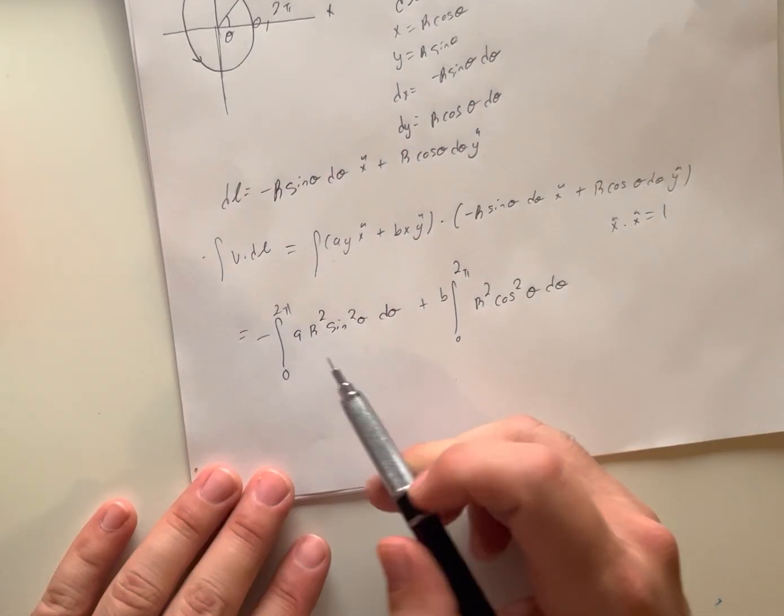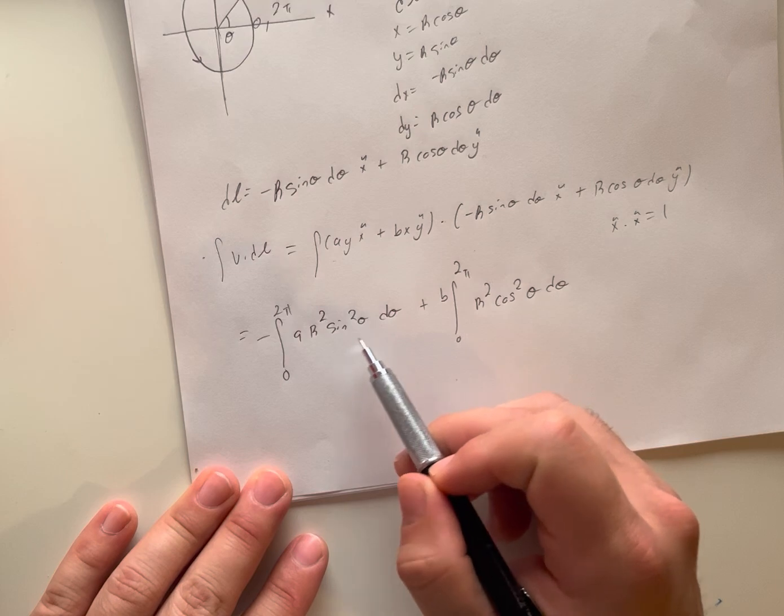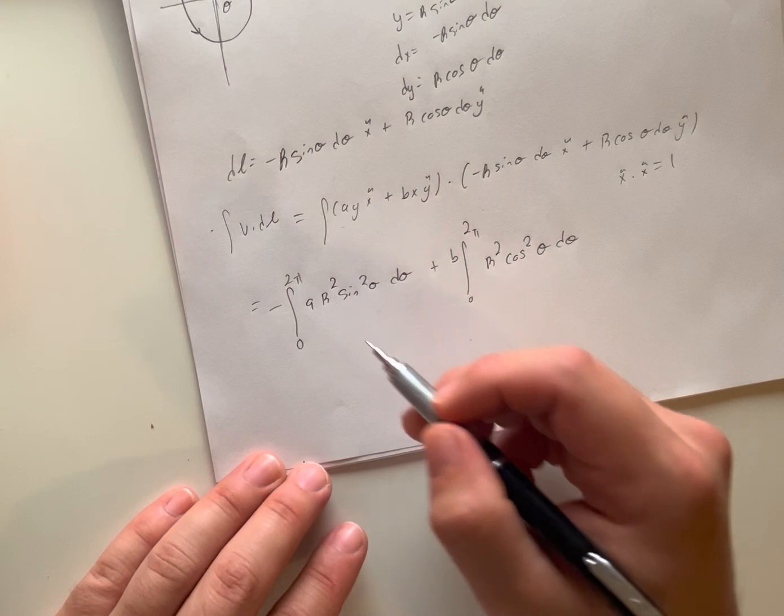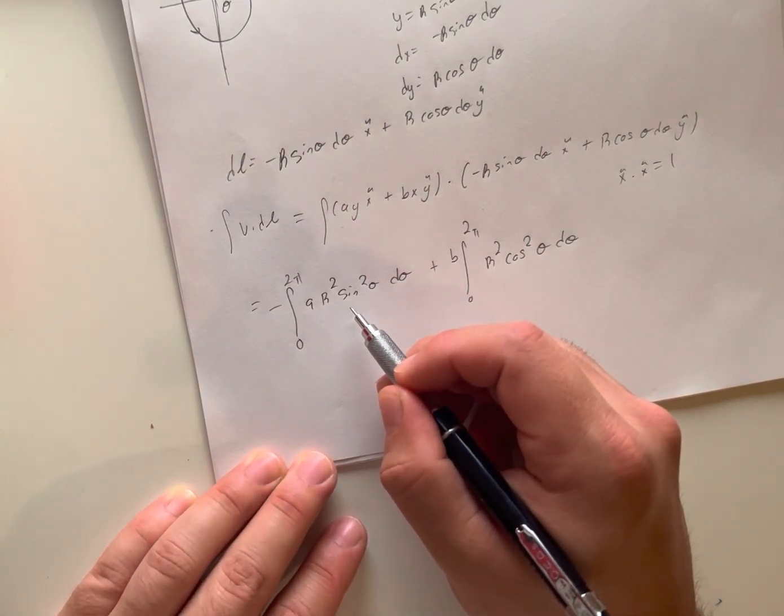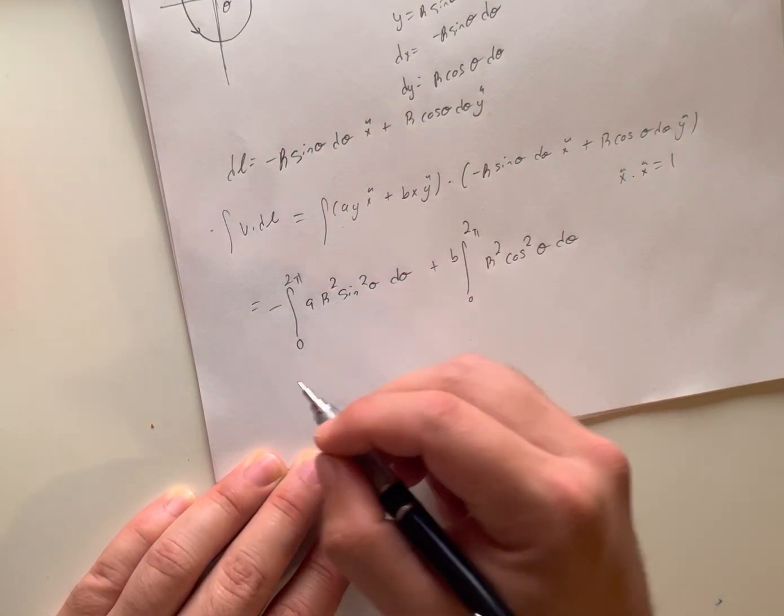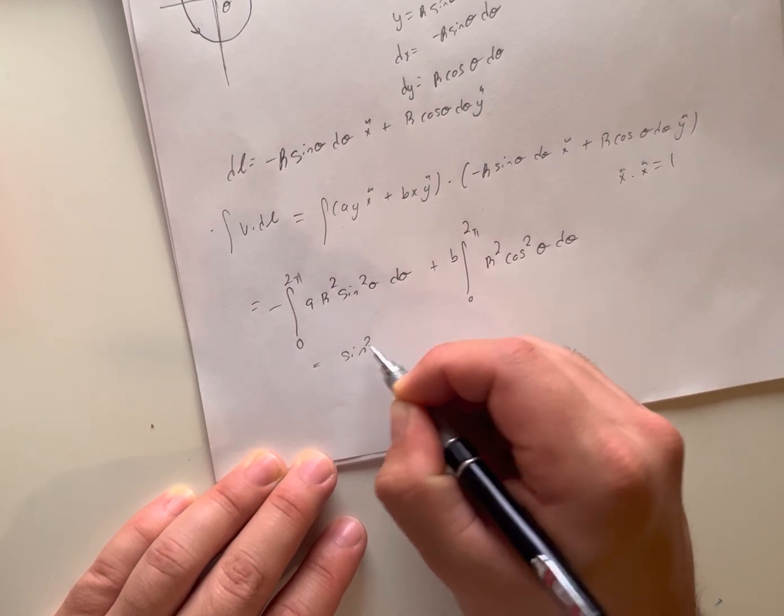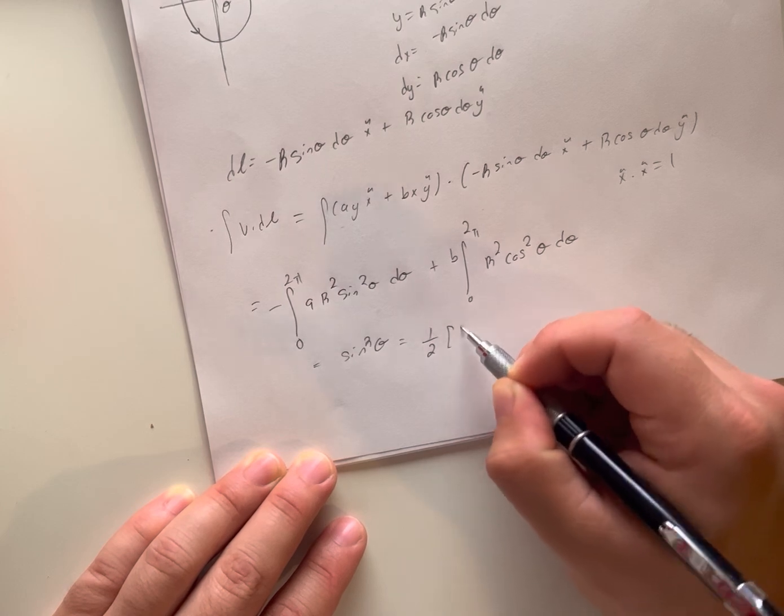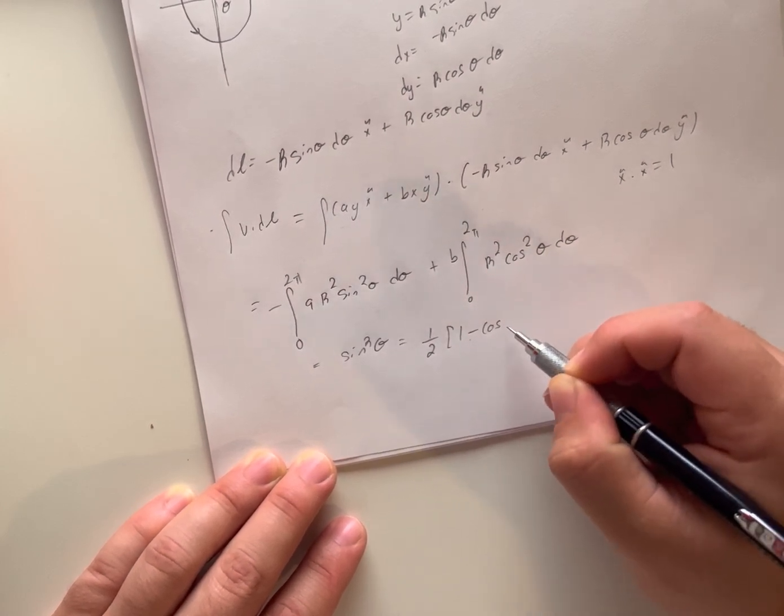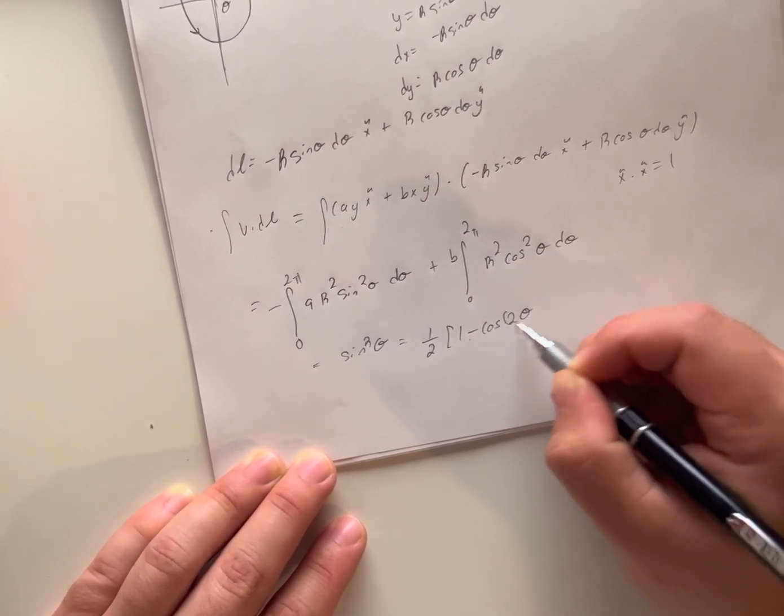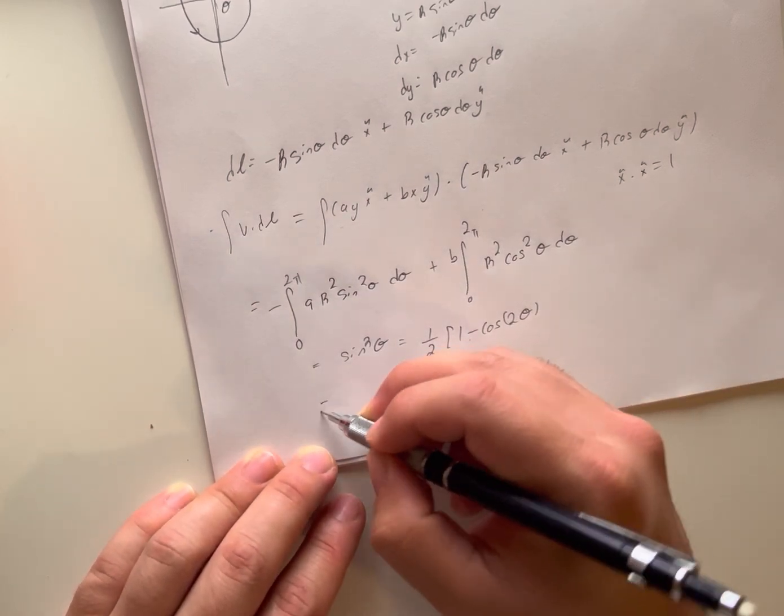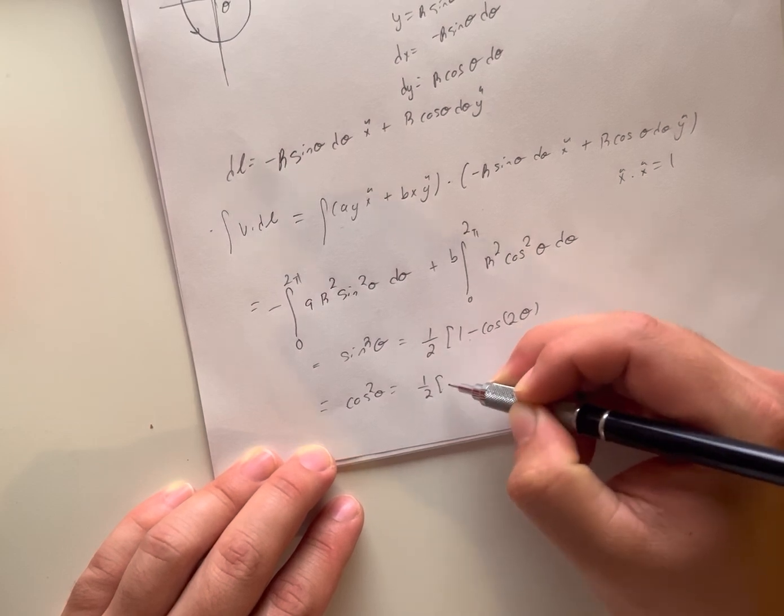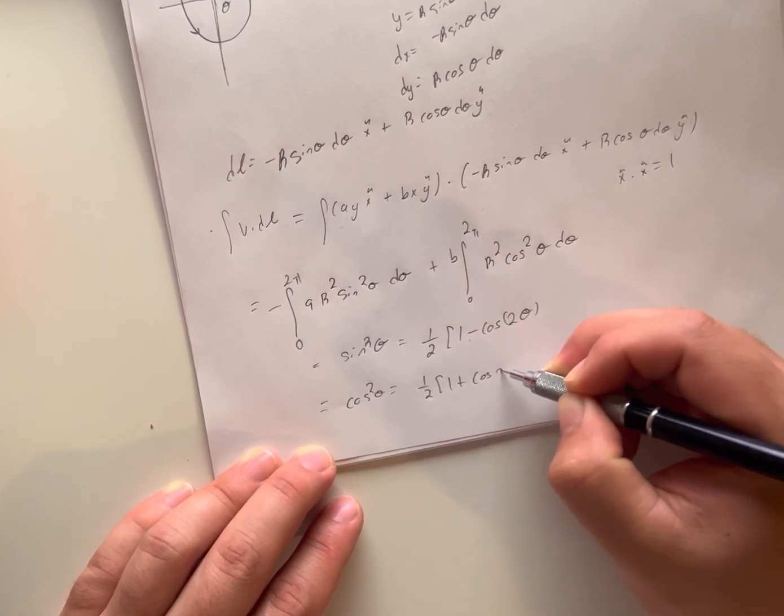Now we can pull all our constants to the front and simplify this down. We know from the half-angle formula that we can make sin^2(theta) become (1/2)*(1 - cos(2*theta)), and the same thing with cos^2(theta) becomes (1/2)*(1 + cos(2*theta)).